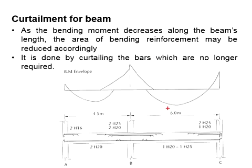As the bending moment decreases along the beam length, the area of bending reinforcement may be reduced accordingly. It is normally done by curtailing the bars which are no longer required.